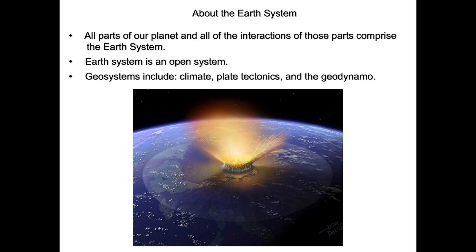What we see happening in this image is an impactor striking the earth. It's traveling through the atmosphere, disturbing the thin layer of gas that surrounds the earth, and heating that atmosphere. It strikes the earth, volatilizes solids and liquids, and those in turn enter the atmosphere. Ultimately, combining this disruption with the biosphere results in potentially an extinction event, as we saw about 65 million years ago, and an even greater extinction event around 250 million years ago, and a number of others prior to that.